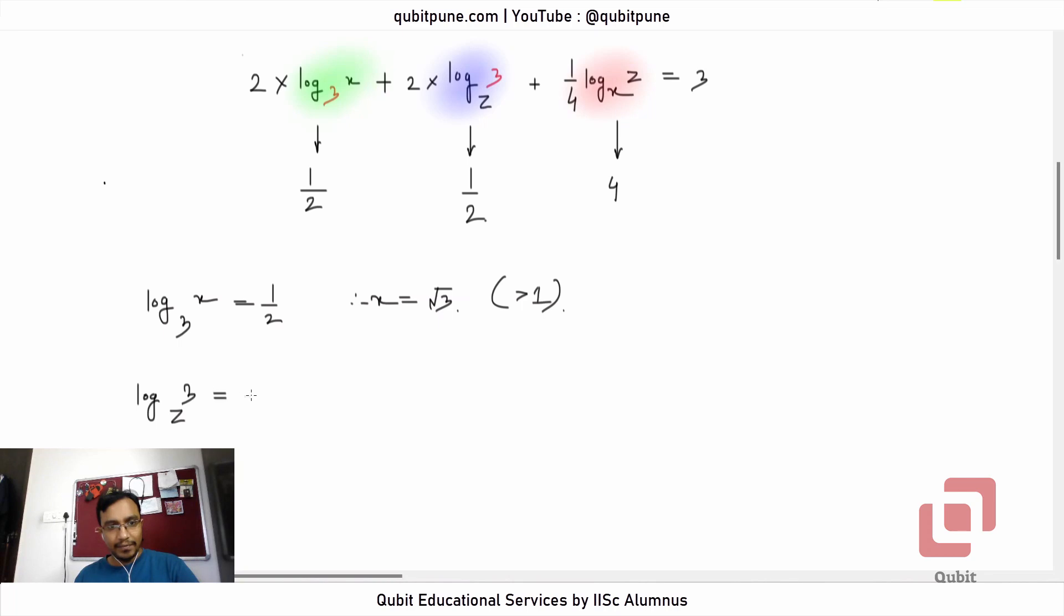Now go to the second one: log of 3 to the base z is half. Therefore, z must be 9, greater than one. Now see if this matches the third one.